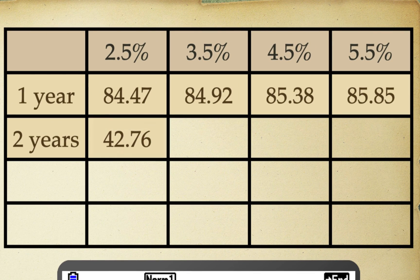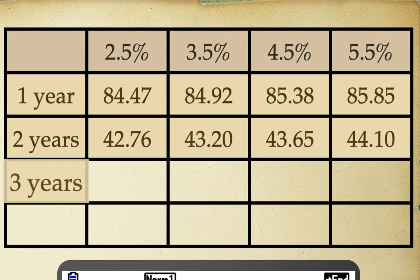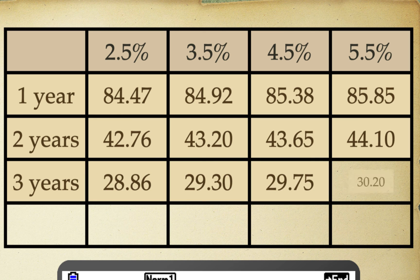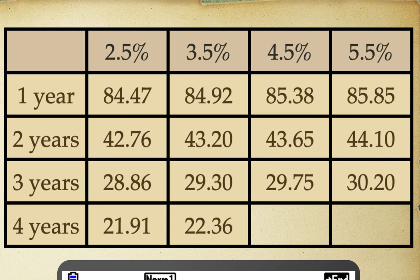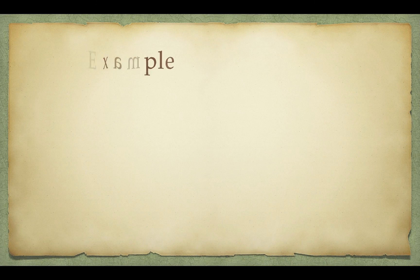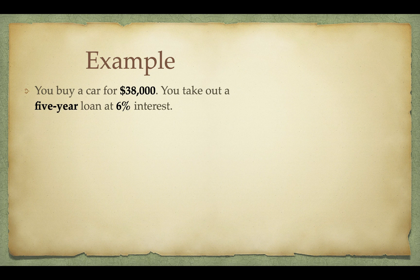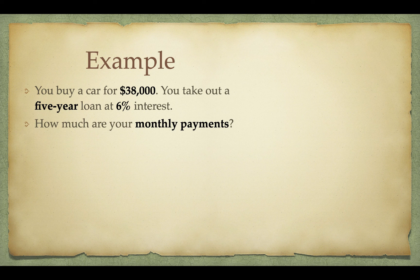I can continue this by just changing those inputs. I've completed the table so you can see the different amounts you'll be paying depending on your interest rate and how long you decide to borrow the money. Here's an example: let's say you buy a car for $38,000 and you take out a five-year loan at 6% interest. How much are your monthly payments going to be?